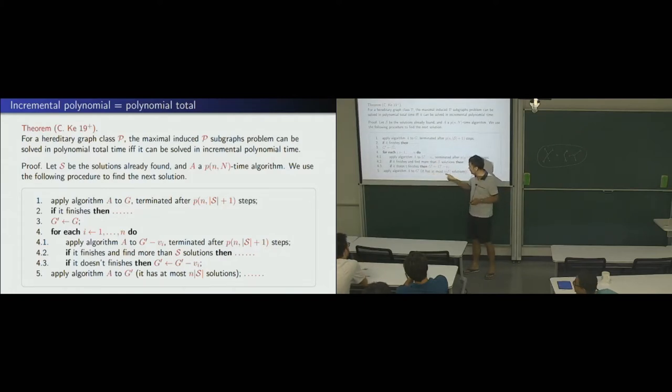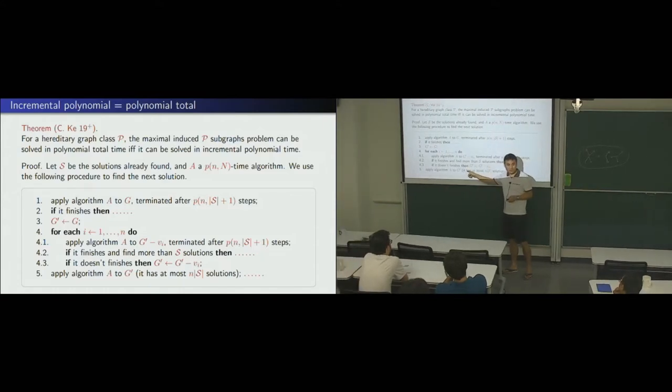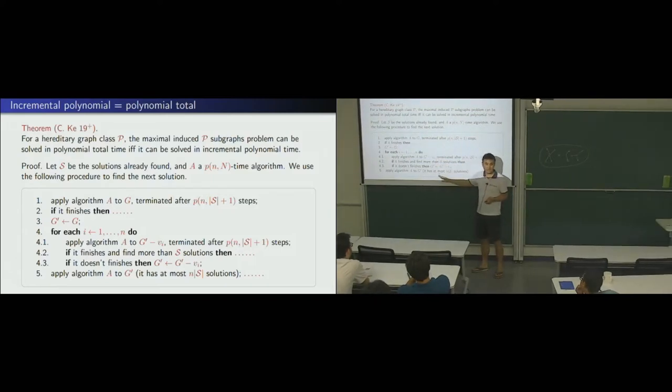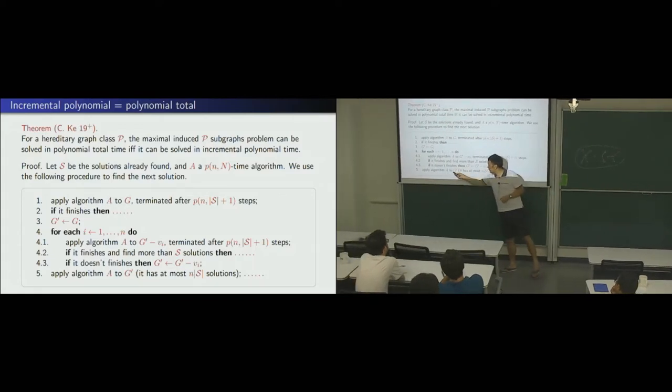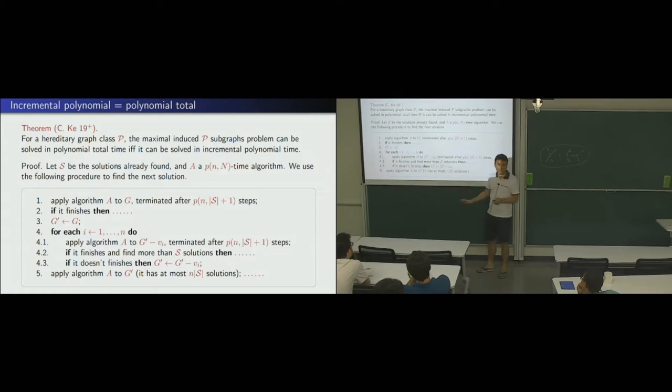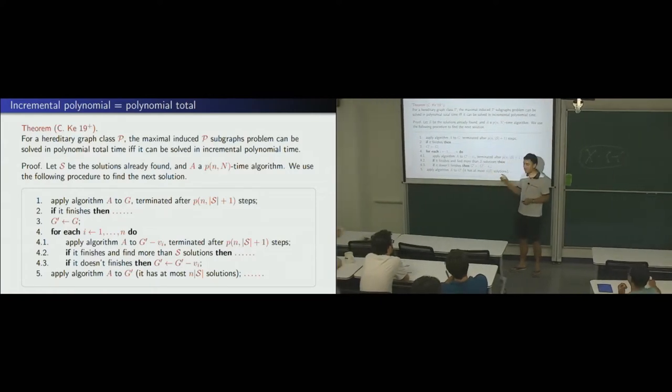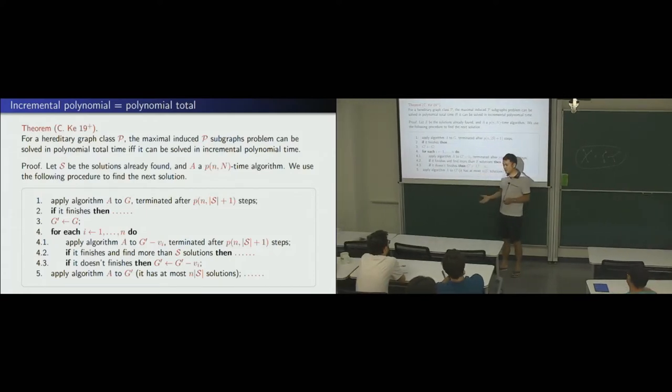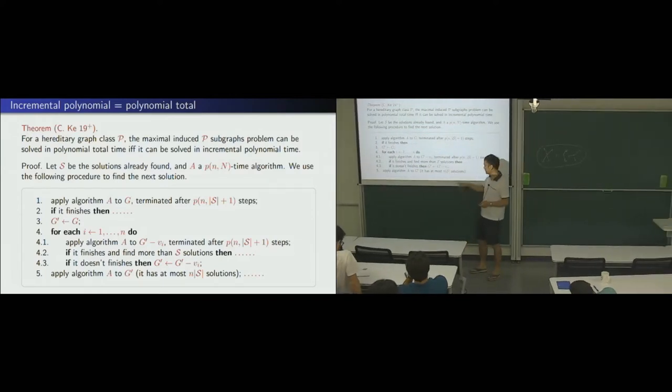Okay? So, the key point is the last part. So, as long as we can do, for this, for all the vertices, okay? Finally, at this step, we can just apply A to G. Now, we do not terminate, we let it finish. Because, we know in this graph, it cannot have more than this number of solutions. Because, for each of this one, it has, if it has more than big S solutions, then we remove it, that way, right? So, for each remaining in G prime, it has less than big S solutions. And, for each, no solution containing vertices. So, it must be one of that. So, totally, we have this, at most, this number.